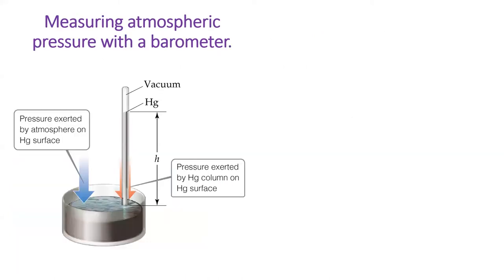A barometer is used to measure atmospheric pressure. The first barometers were made of liquid mercury upturned in a tube. The atmospheric pressure pushes on the surface of mercury, which in turn pushes back on the mercury in the tube. The height of the mercury which remains aloft is directly related to the pressure. However, no one really uses mercury barometers anymore.